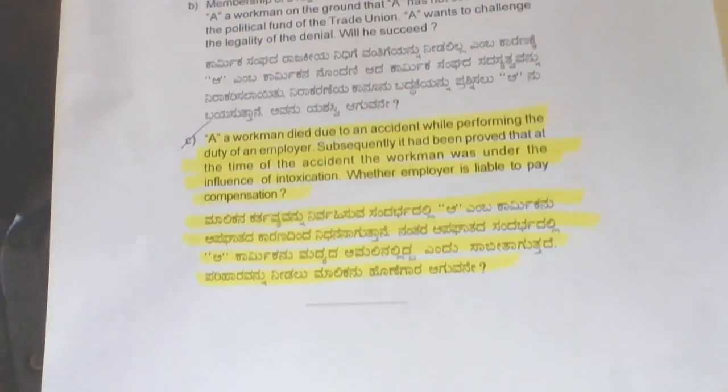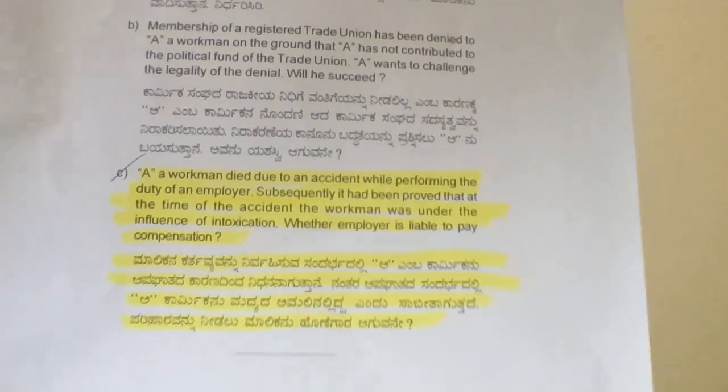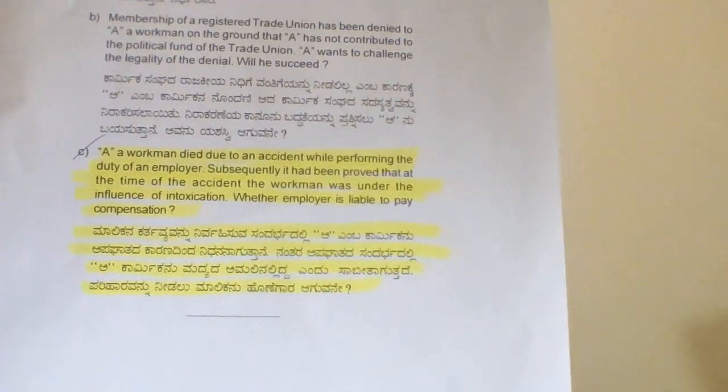Here you can see the second question. A workman died due to an accident while performing the duty of an employer. Subsequently, it had been proved that at the time of the accident, the workman was under the influence of intoxication. Whether the employer is liable to pay compensation. You have to think: which act does this belong to? Immediately you can know this is the Employees Compensation Act 1923.